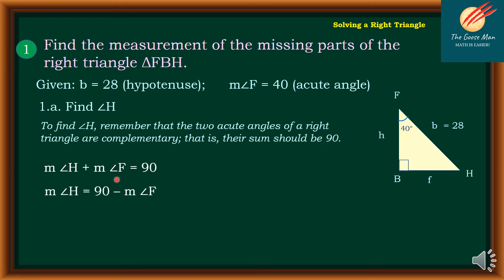If I manipulate this a little bit, the measure of angle H is equal to 90 minus the measure of angle F. But then, take note that the measure of angle F is equal to 40 degrees. So therefore, the measure of angle H is 90 minus 40.